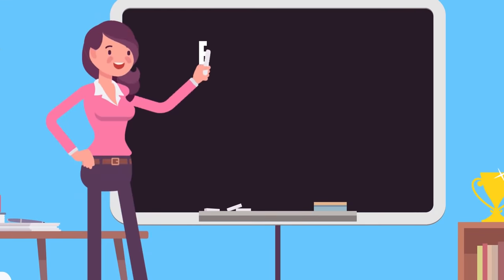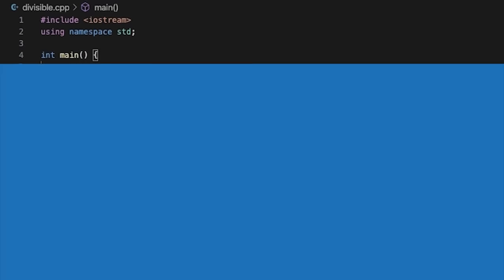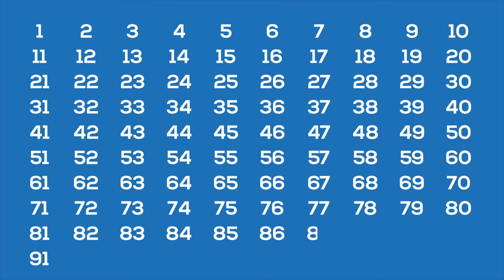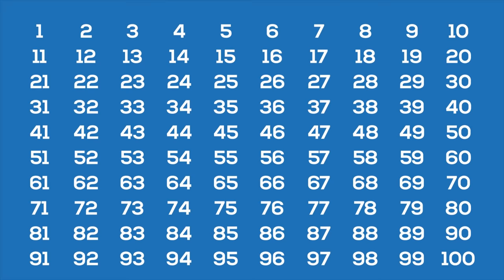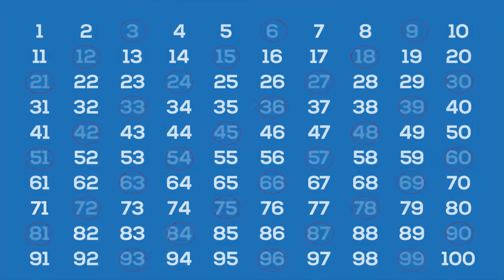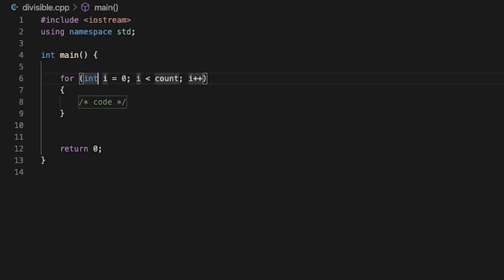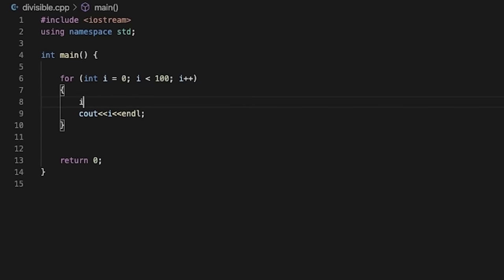Now let's see some other examples of break and continue so we get a better understanding of their implementation. Our next question: we have a loop that will print numbers from 1 to 100. We don't want to print any numbers that are divisible by 3, so we will skip those. Now let's check whether a number is divisible by 3 or not.